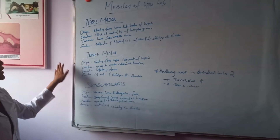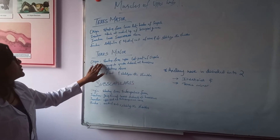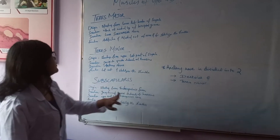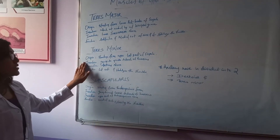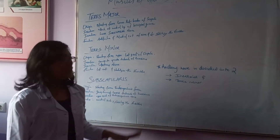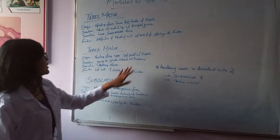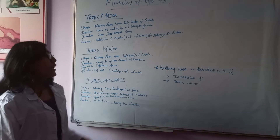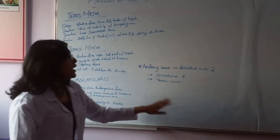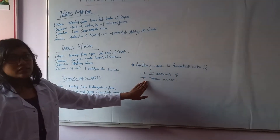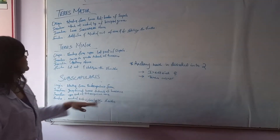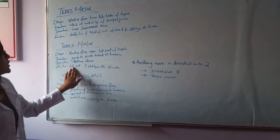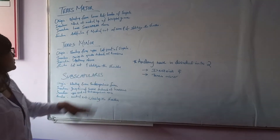The teres minor originates from the upper lateral border of the scapula and inserts at the greater tubercle of the humerus. Its innervation is the axillary nerve, which divides into two parts supplying the deltoid and teres minor. Its function is lateral rotation and it stabilizes the shoulder.